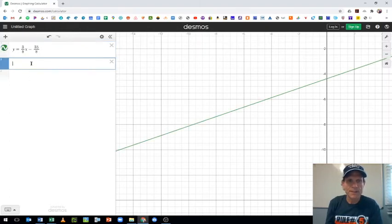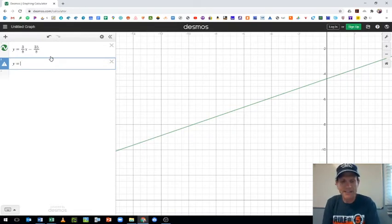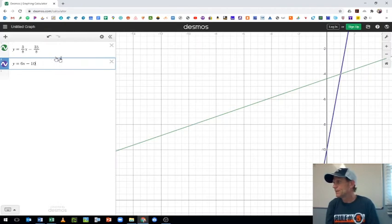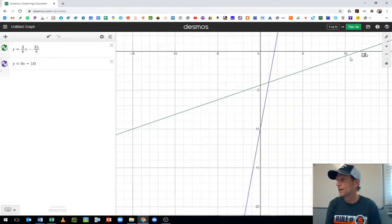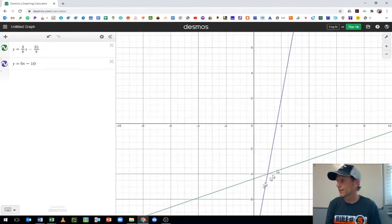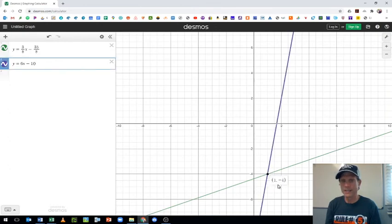And what we find here is, if I got everything typed in correctly, is that we find that the intersection is at, and I can hit this home button if I'd like, the intersection is at 1 negative 4.